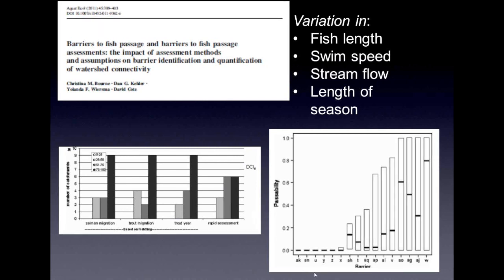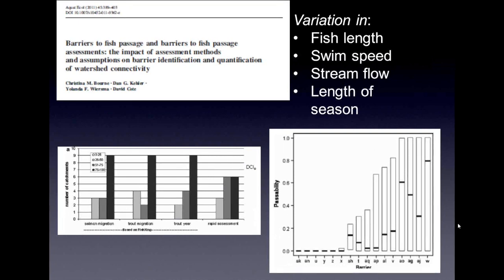The take-home message is that the actual values of the DCI change a little bit depending on the passability method, but basically the relative rankings don't change too much. At an individual barrier level, some culverts were always impassable no matter what parameters were used in Fish Crossing, while others could be defined as passable or impassable depending on the parameter combination. There was a fair bit of uncertainty in the passability estimates of individual culverts, but the ranking of culverts across the park — in terms of which ones had the most impact on connectivity — didn't really change. So in a relative sense the DCI still worked consistently, even though the absolute value was sensitive to passability measurements.